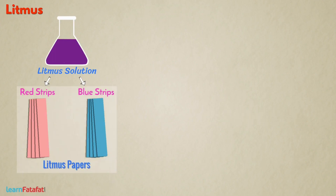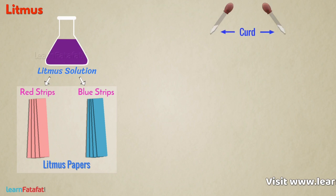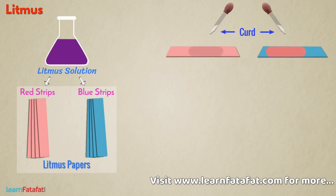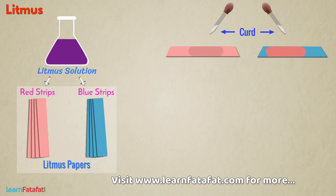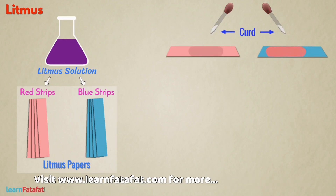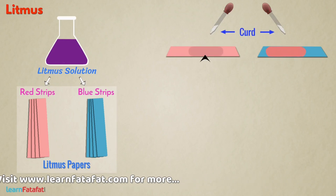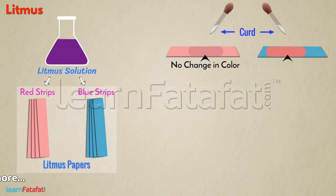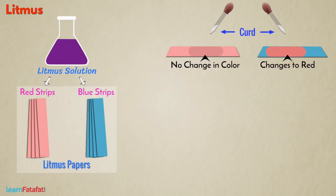To test the nature of a solution — say, for example, curd — we take a small quantity in a dropper and put one drop each on red and blue litmus paper. In the case of curd, you will see that the red litmus paper does not change color. However, the blue litmus paper changes to red.